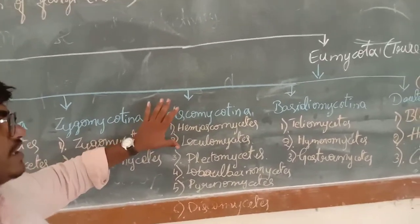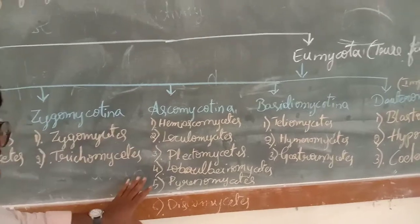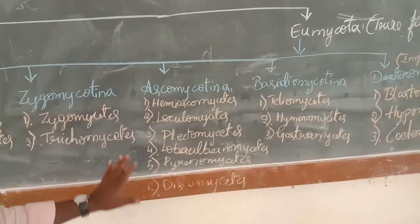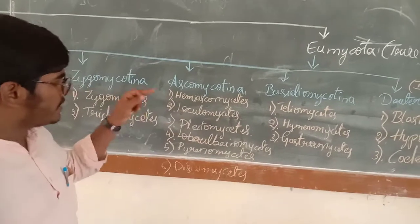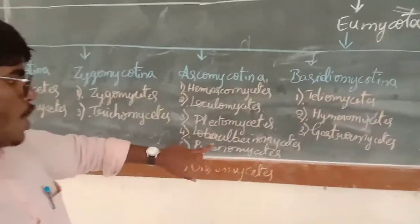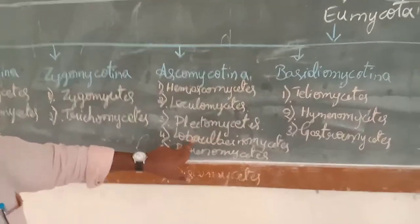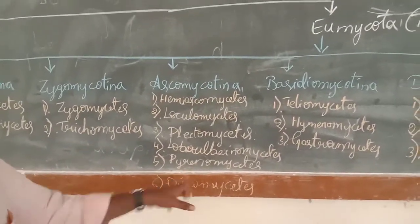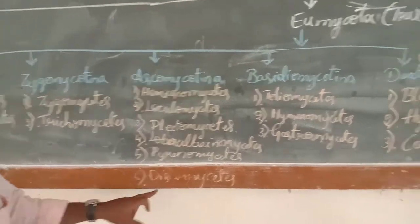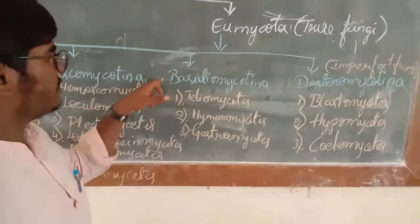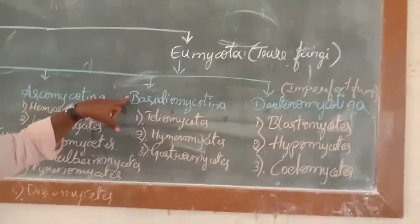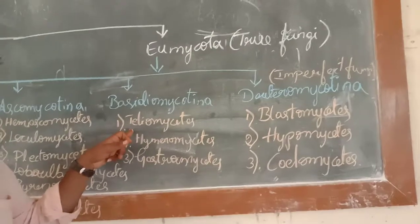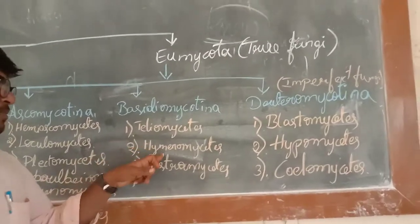Ascomycotina is further divided into six subclasses: Hemiascomycetes, Loculoascomycetes, Plectomycetes, and Discomycetes. The fourth subdivision, Basidiomycotina, is divided into three subclasses: Teliomycetes, Hymenomycetes, and Gasteromycetes.